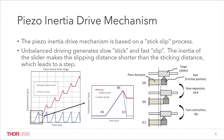With many cycles of stick and slip, the stage is driven forward step by step. With the reverse slip-and-stick process, the stage can travel backward.